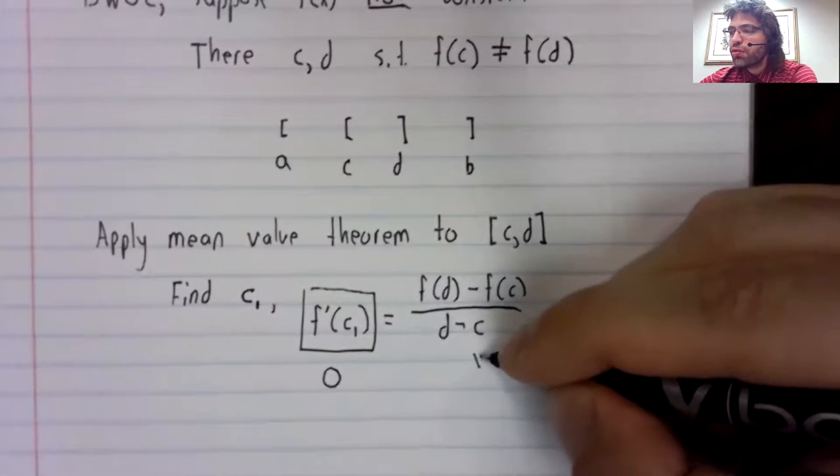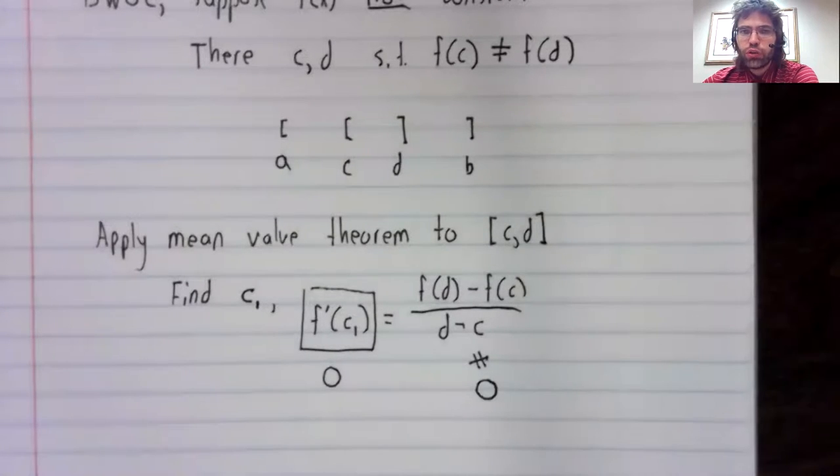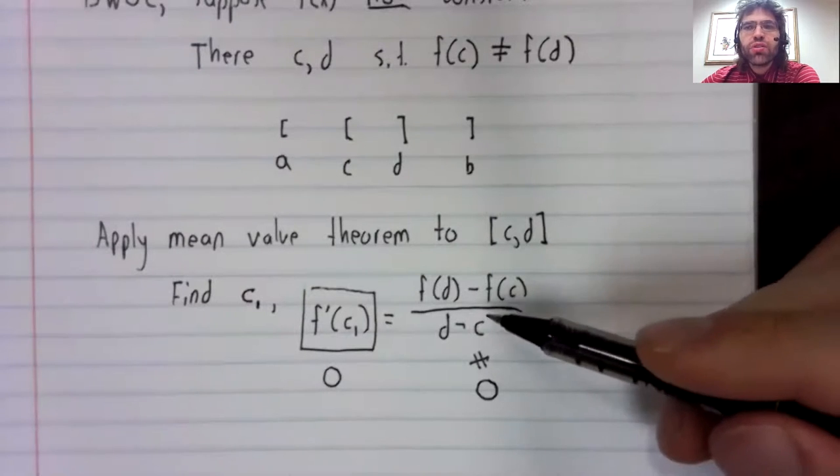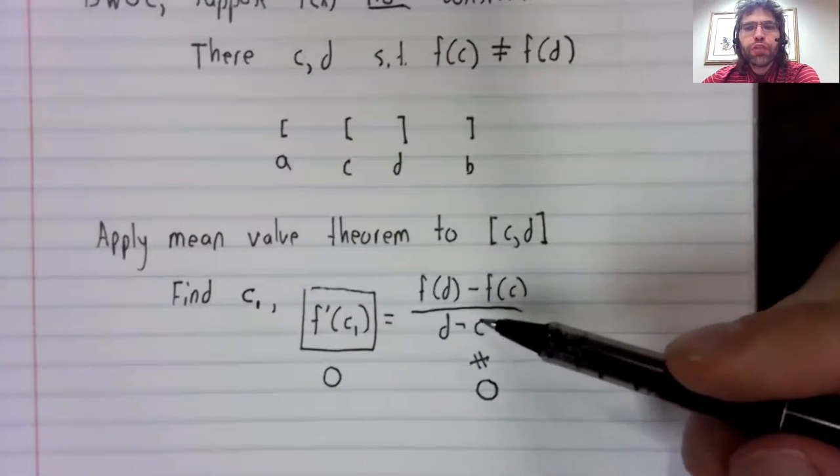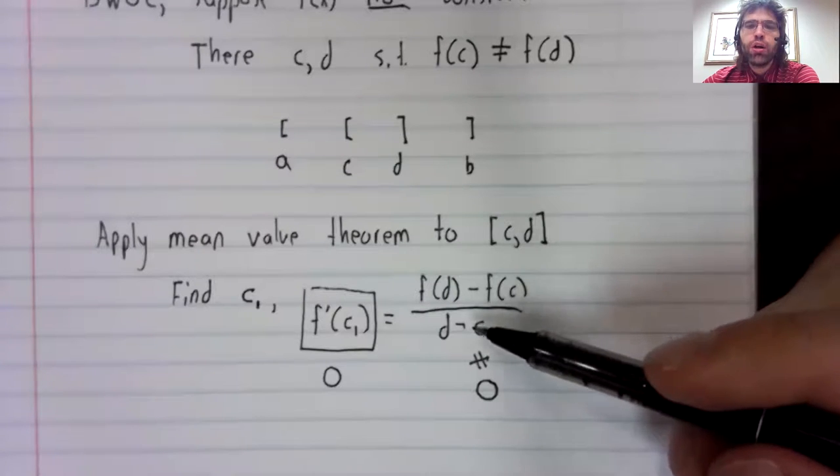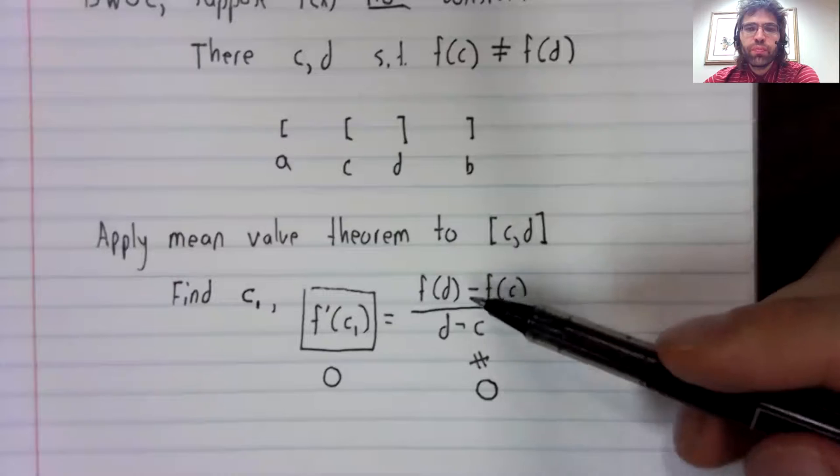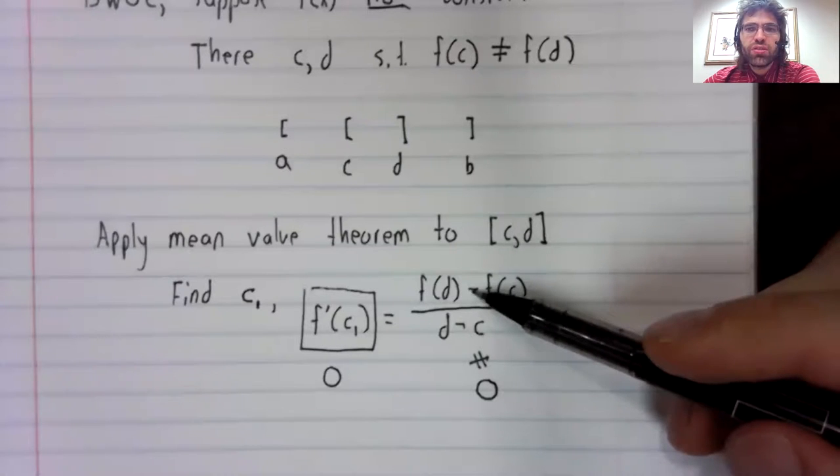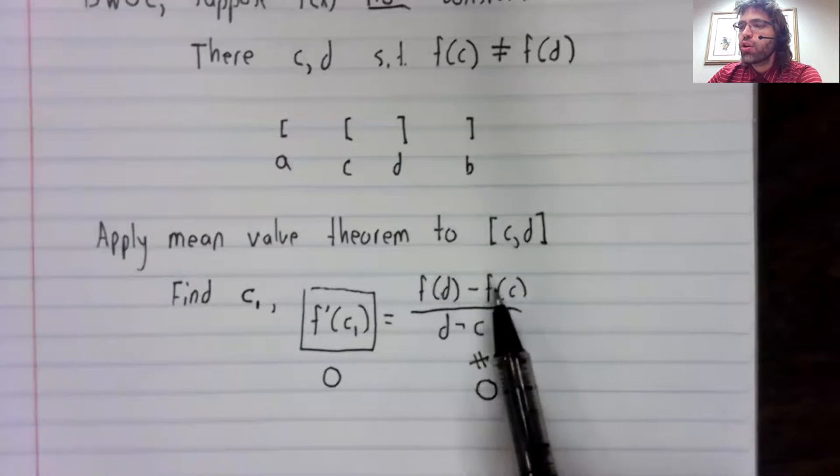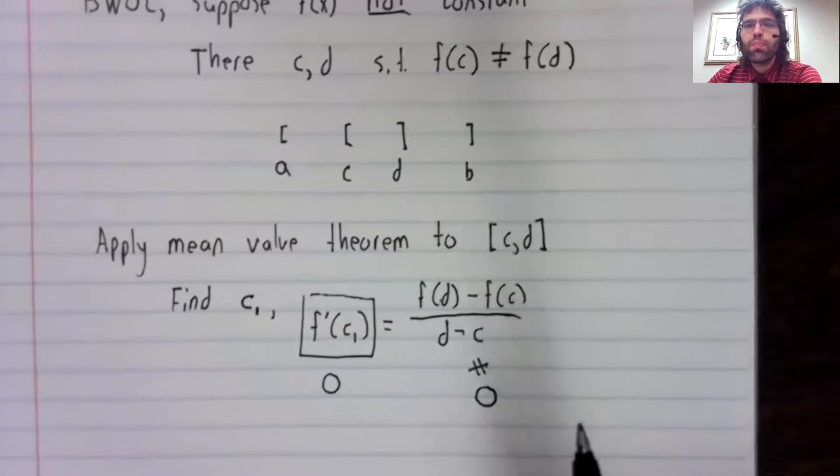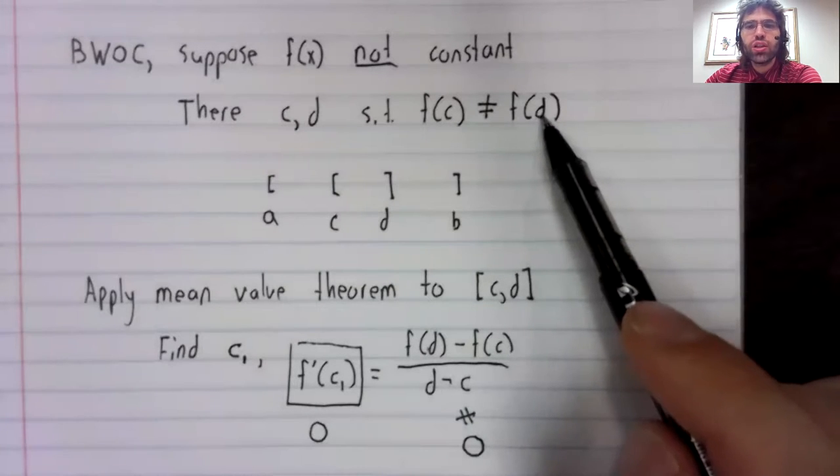But this fraction is not zero. And the way I know this fraction isn't zero is that the only way a fraction can be zero is if its numerator is zero. This numerator is only zero if these numbers are equal. But these numbers are not equal.